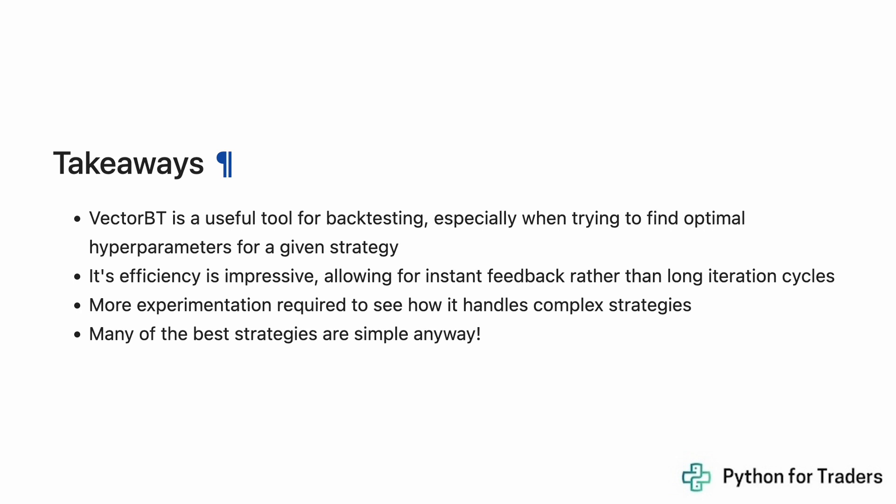The takeaways: VectorBT is a useful tool for backtesting, especially when finding optimal hyperparameters for a given strategy. I found its efficiency very impressive — every line of code basically executes instantaneously, giving a very fast feedback loop rather than long iteration cycles where a backtest might take 5–10 minutes. I think there's more experimentation needed for complex strategies, but many of the best strategies are quite simple anyway, and VectorBT could handle those well.